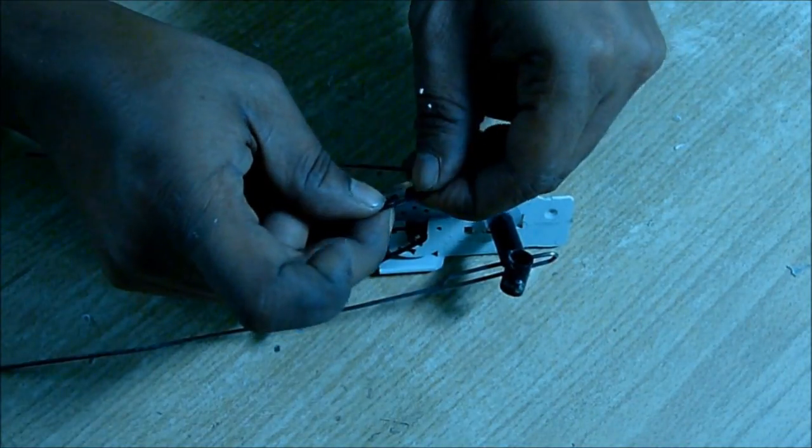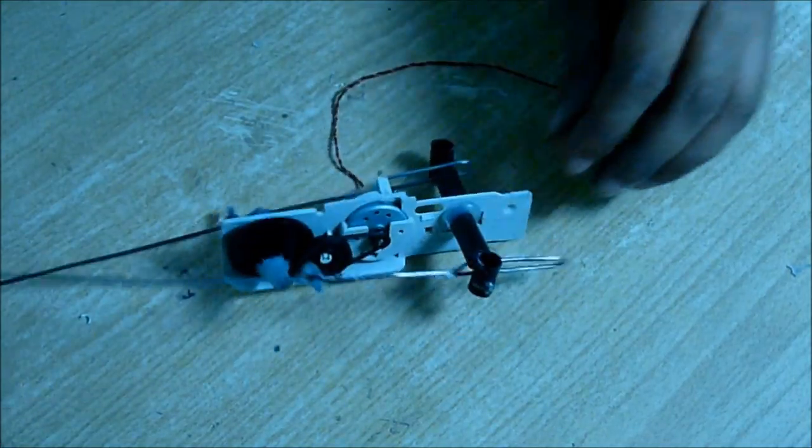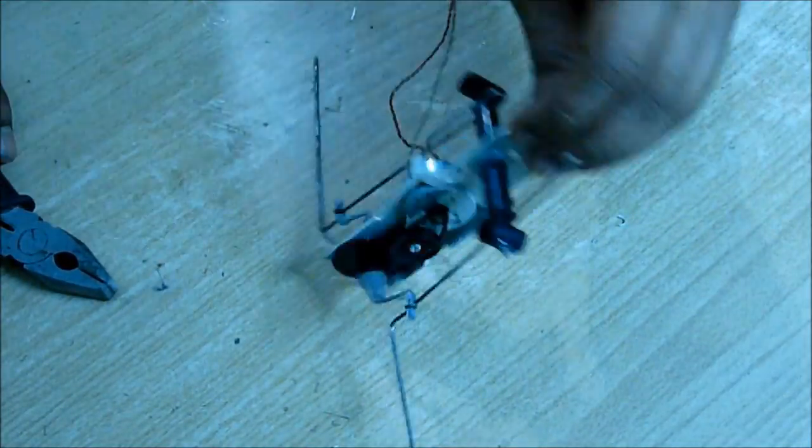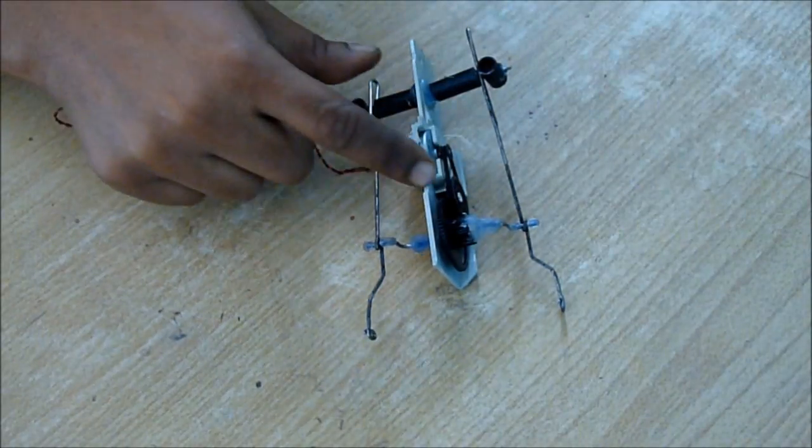If you power it up you can see it's freely moving. Now bend the leg a little bit wider here and cut the extra length. At the end you can see I'll make it a loop.